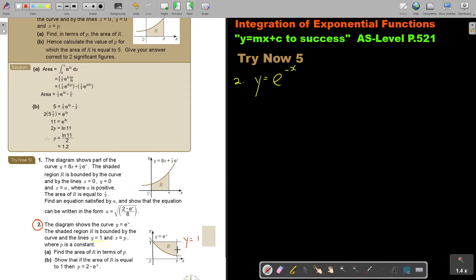And x is p, where p is a constant. Find the area of R in terms of p. Now, this is the reason why I gave you this one, because there's an extra line in.